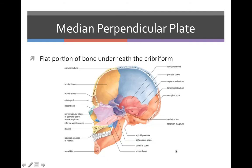The median perpendicular plate is a flat portion of the bone underneath the cribriform plate, and it is right underneath where the pink is shown right there.